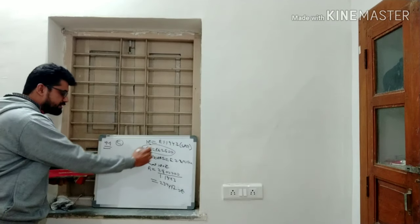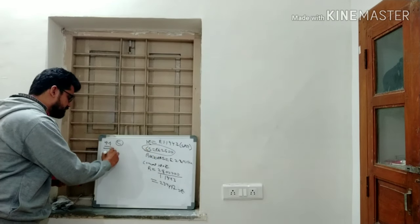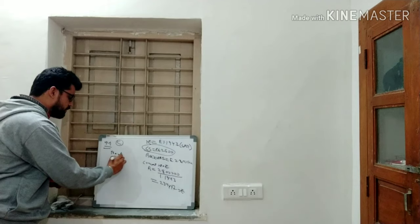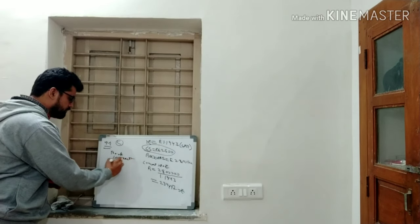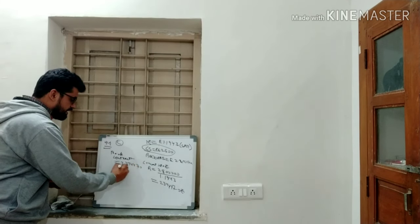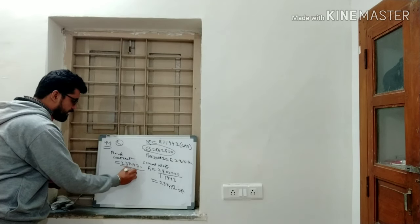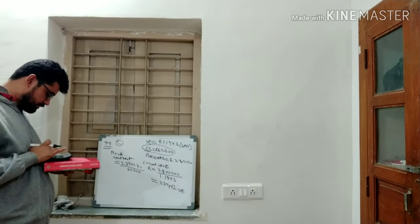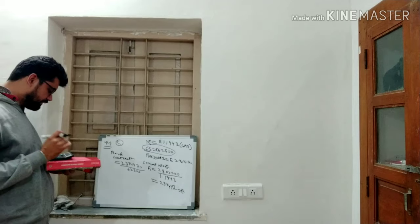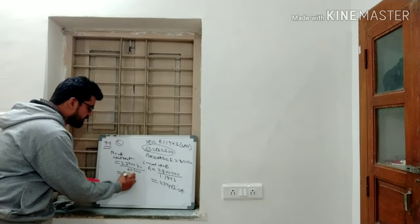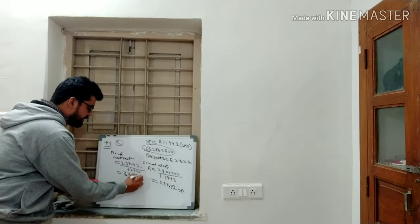Now I have the receipt converted to Pounds as £2,344,170, and my contract size is £62,500. So the number of contracts = 2,344,170 divided by 62,500 = 37.5. Since contracts must always be whole numbers, we round to 37 contracts.